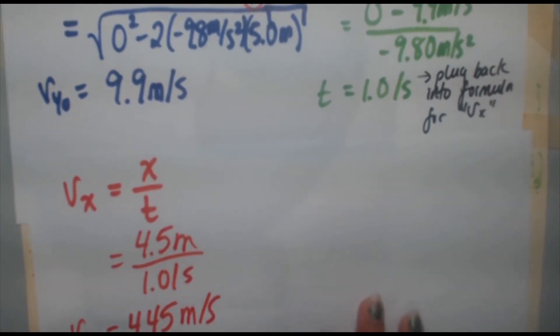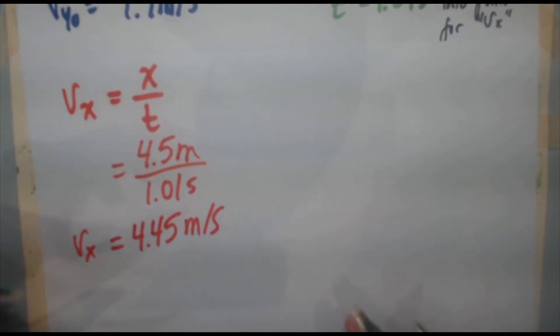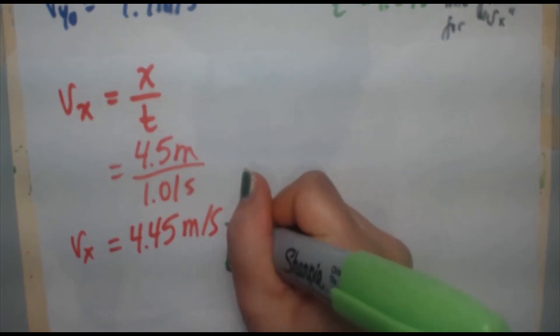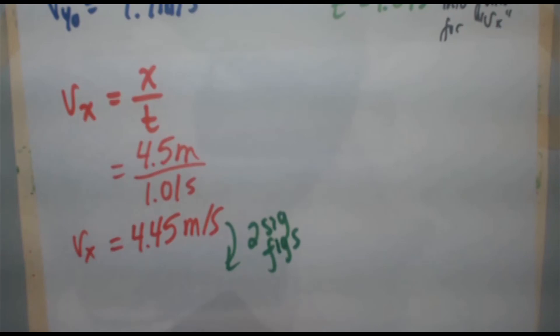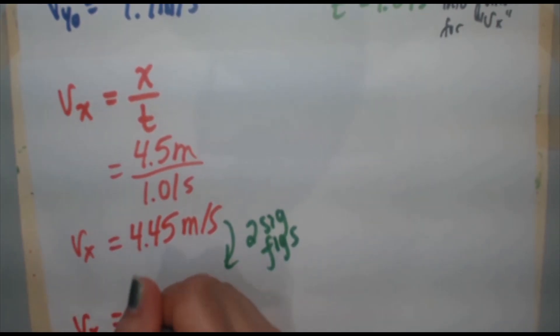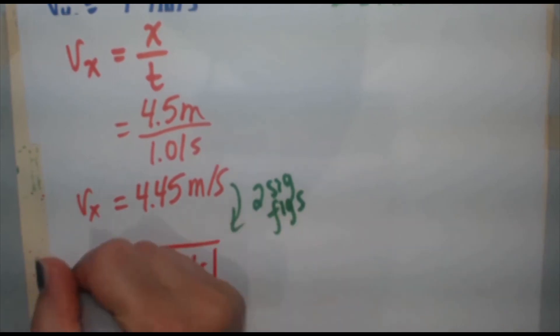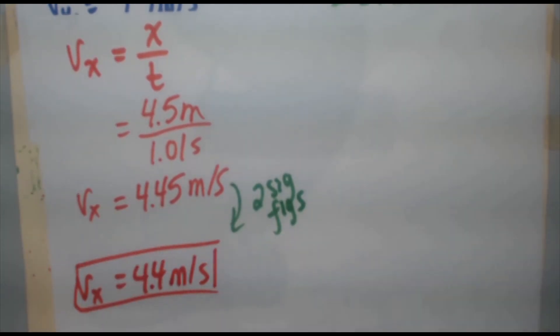Now one last step. We have to account for sig figs. We need to have two sig figs in our final answer. So this will round to vx equals 4.4 meters per second. Therefore, when the pebbles hit Juliet's window, they are going 4.4 meters per second.